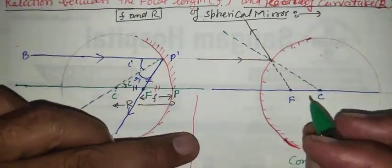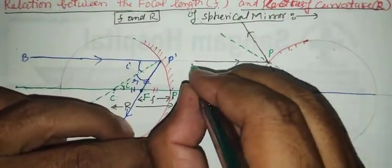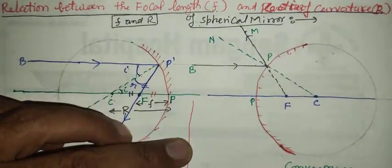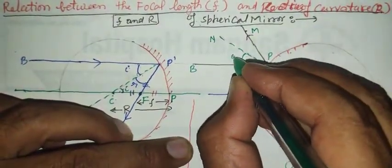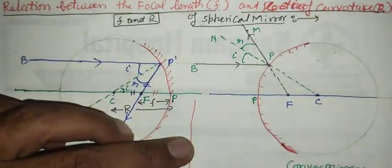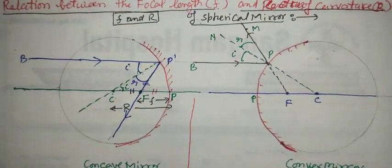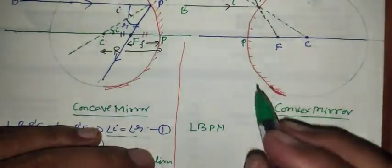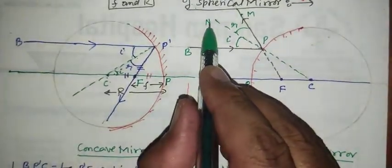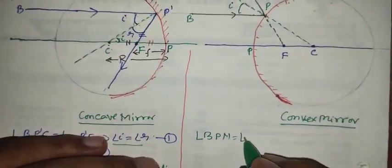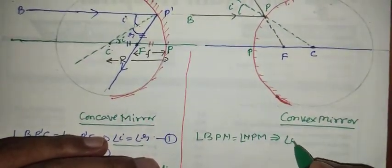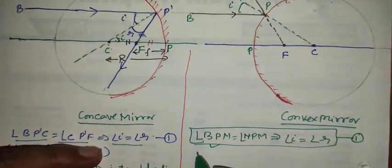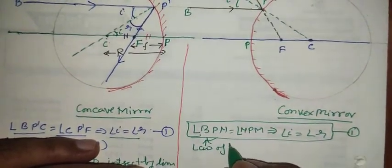In both cases, let this be the pole. We have point P dash, point B, normal N, and point M marked. Here the angle of incidence is i and the angle of reflection is r. Now see carefully: angle B P N is equal to angle N P M, which equals angle i equal to angle r. This is from the law of reflection — equation number one.